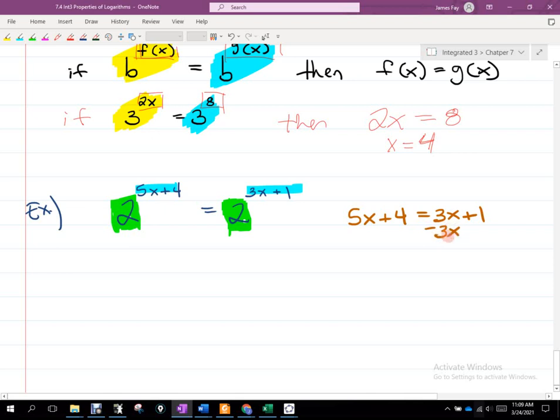Go ahead and solve that equation. Subtract 3x from both sides. Then subtract 4 from both sides. Then x will be negative 3 halves.